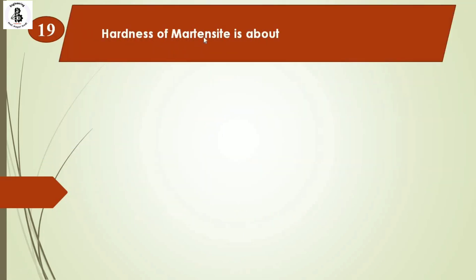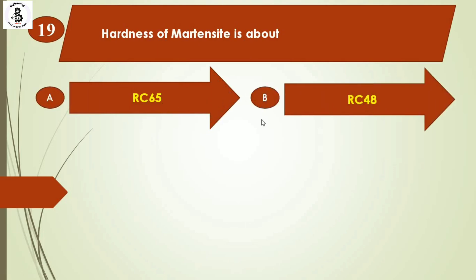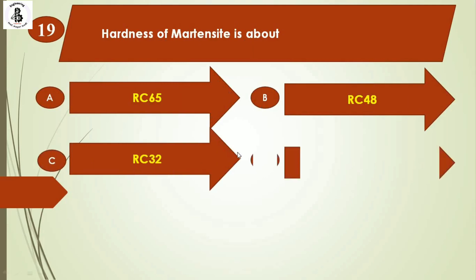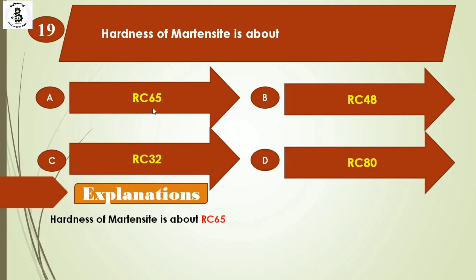Question 19: Hardness of martensite is about — Option A: RC 65, Option B: RC 48, Option C: RC 32, Option D: RC 80. RC refers to Rockwell hardness number. Martensite has a very high hardness value, around 65 to 70 — not around 80. The most relevant option is RC 65. The right answer is Option A.